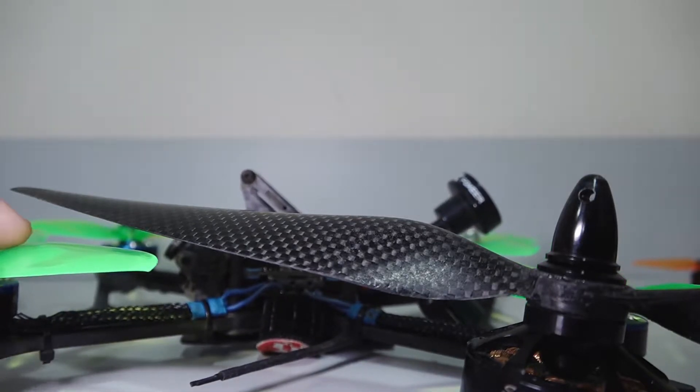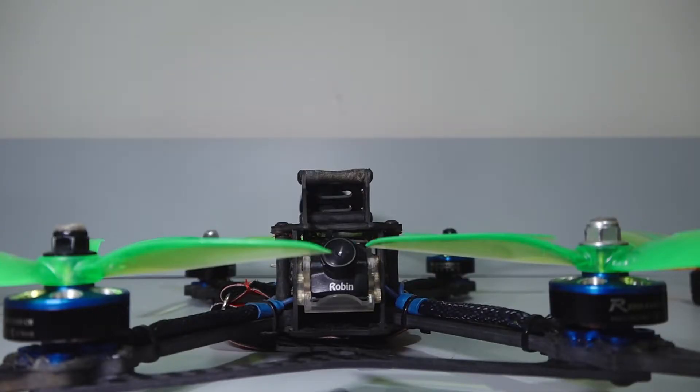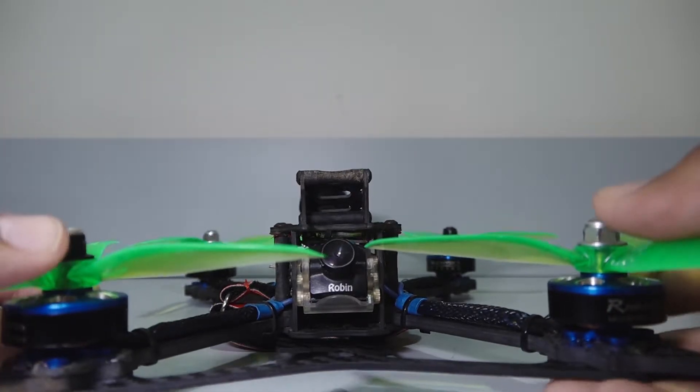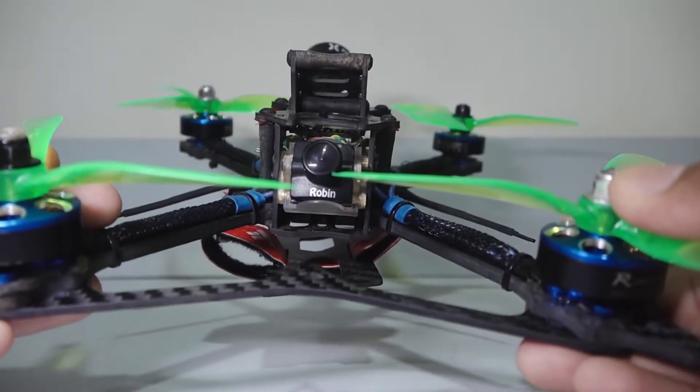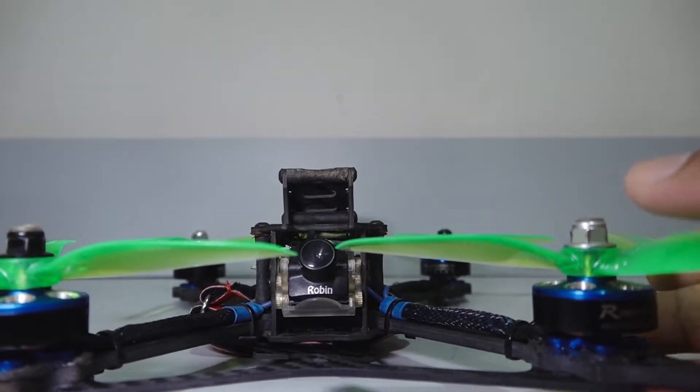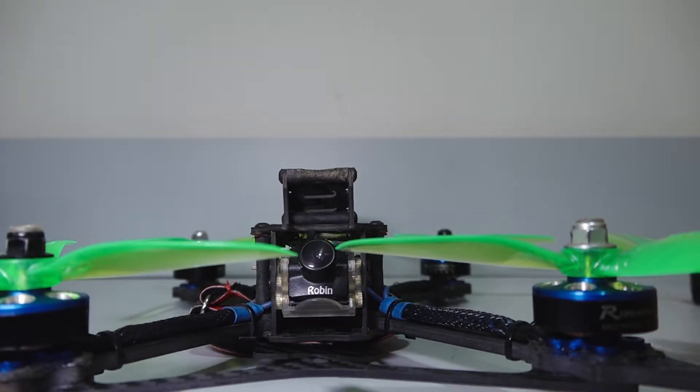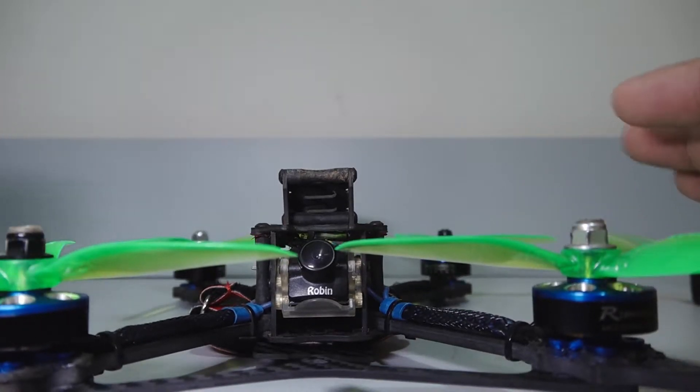To select the right motors for your drone, first estimate the weight of the drone, then add some extra buffer. The thrust produced by all four motors should be at least twice the weight of the craft. For example, if this craft was 1 kg, the motors should produce at least 2 kg of thrust. In a quadcopter with four motors, each motor should produce 500 grams of thrust.